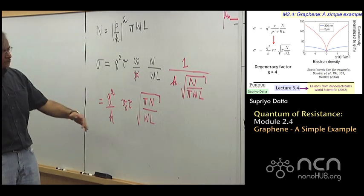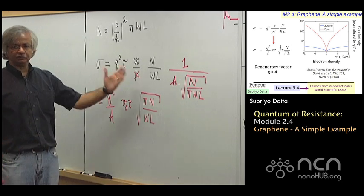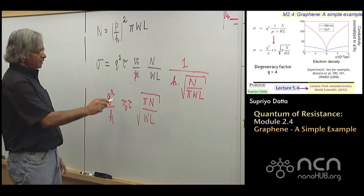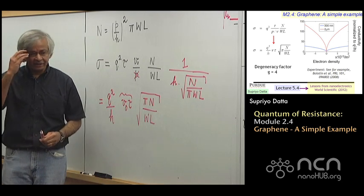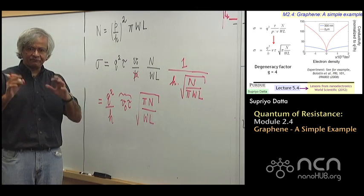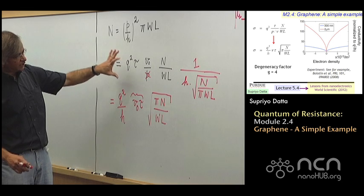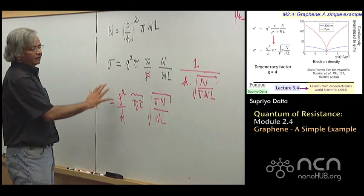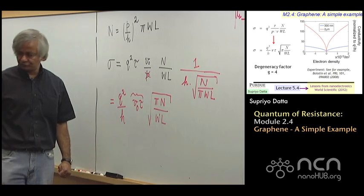Q squared over H. That is this V0 tau. And you'll notice, there is N, this is electrons per unit area, but then there's a square root of electrons per unit area. So you get square root of Pi times, so I'll write this. Yeah, I think I got all the factors, so that is basically it.